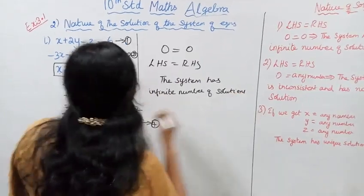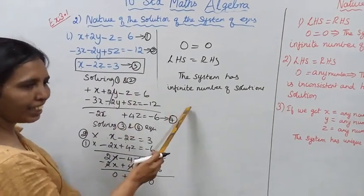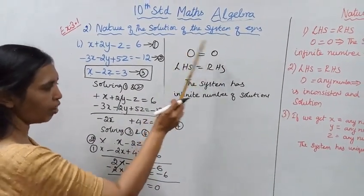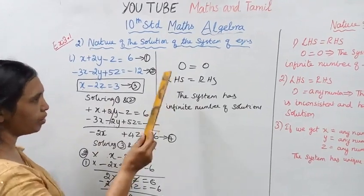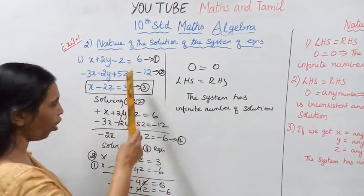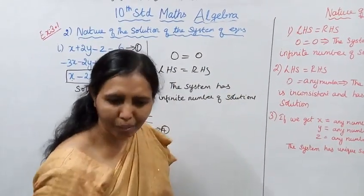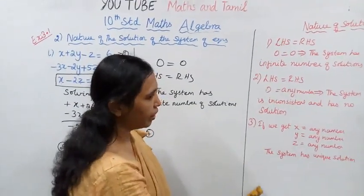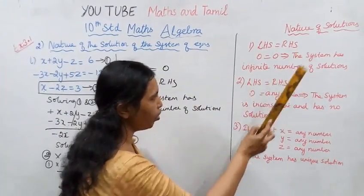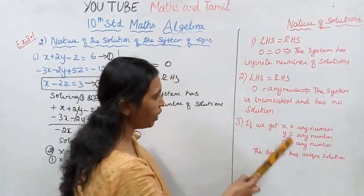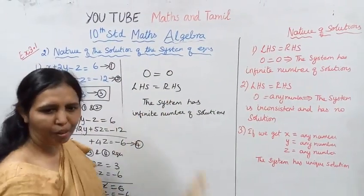What is the nature of the solution of the equations? Left hand side equal to right hand side, 0 equal to 0. Therefore the system has an infinite number of solutions.